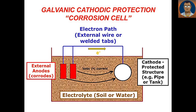The magnitude of the current flow is directly proportional to the rate of corrosion. As a rough statistic, approximately 10 kg of steel is consumed by 1 ampere of DC passing over a steel surface for one year.